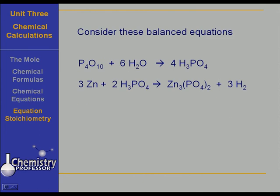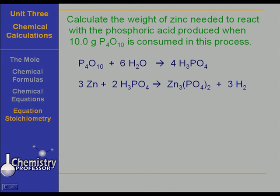Here is a system. Now I'm going to use two equations this time. Instead of having you calculate one equation and then pull that amount and calculate the other, I'm going to show you how to combine the two and work it as one problem very easily thanks to the concept of mole to mole ratios. We want to calculate the weight of zinc that we need to react with the phosphoric acid produced when 10 grams of P4O10 is consumed. We want the zinc but we're starting with the P4O10. The zinc is in one equation, the P4O10 is in another equation. That is perfectly okay.